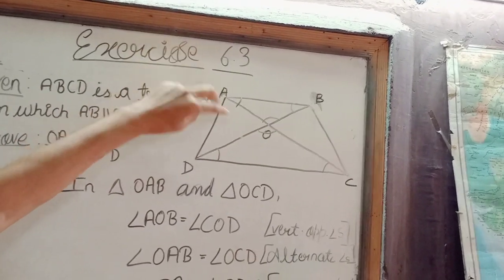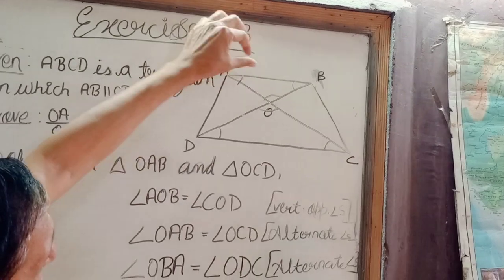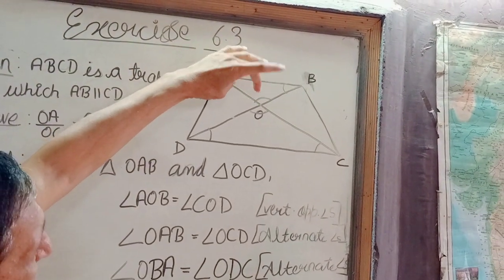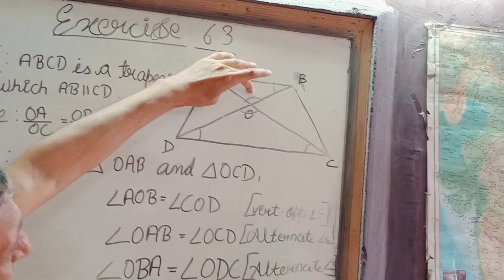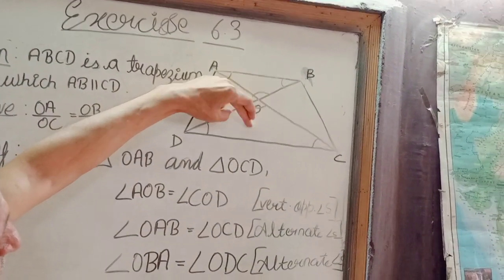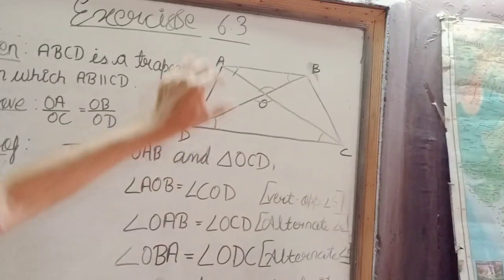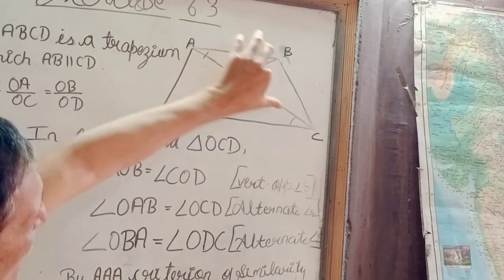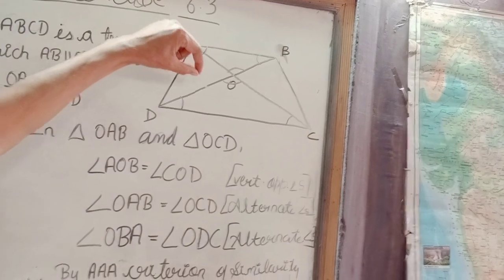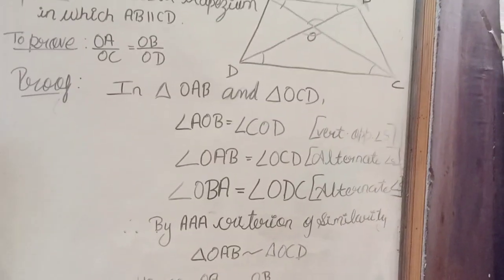Once these two triangles are similar, then the corresponding sides of these triangles are in the same ratio. That means OA upon OC is equal to OB upon OD, and this is what we were to prove.